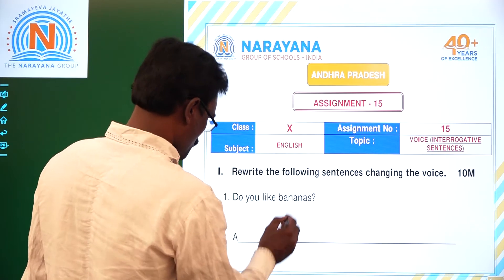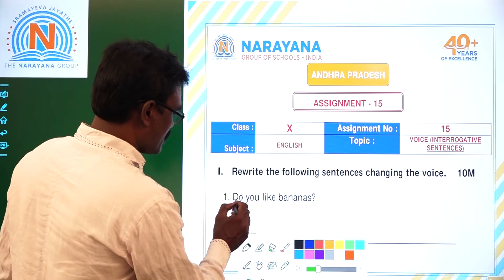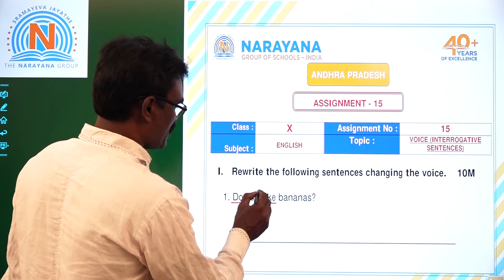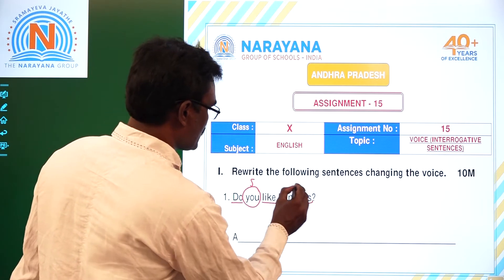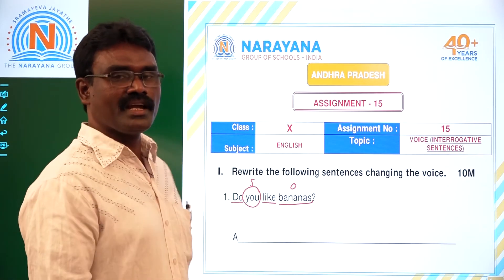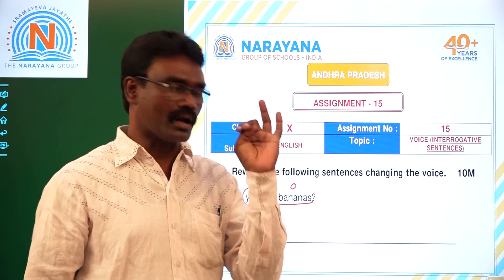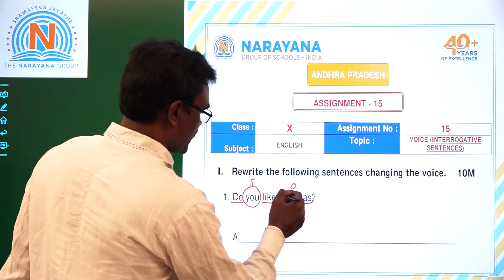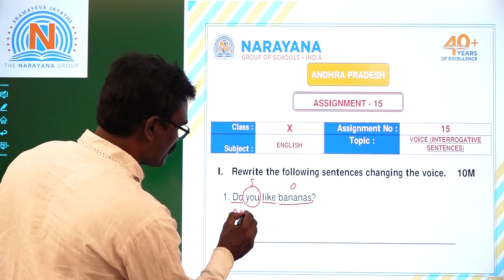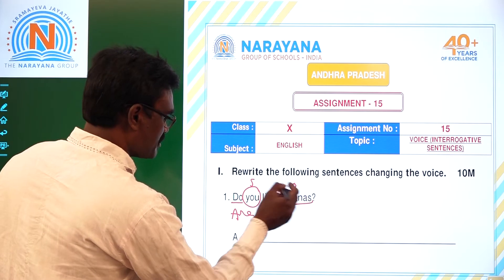First one, let us see here: 'Do you like bananas?' Here, 'do' is the helping verb, 'like' is the main verb, 'you' is the subject, and 'bananas' is the object. When a sentence begins with 'do' or 'does,' that is present tense. In present tense, we use 'are' or 'is,' and V3 form.